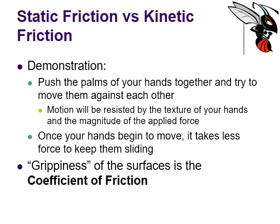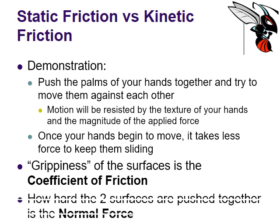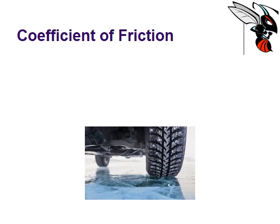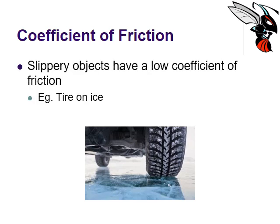The grippiness of the surfaces is called the coefficient of friction. If you did that same demonstration with rubber gloves, you'd be increasing the coefficient of friction. How hard the two surfaces are being pushed together — how much force you're exerting on the palms of your hands — that's called the normal force. A tire on ice, for example, has a low coefficient of friction. The grippiness or slipperiness of the surface — that's the coefficient of friction.